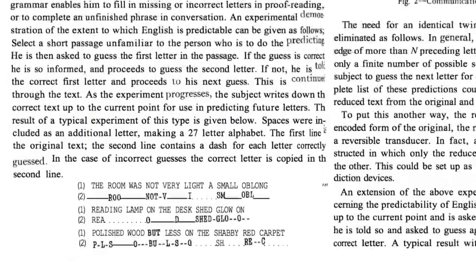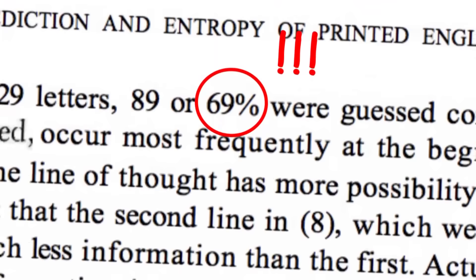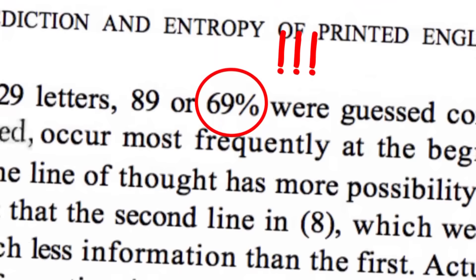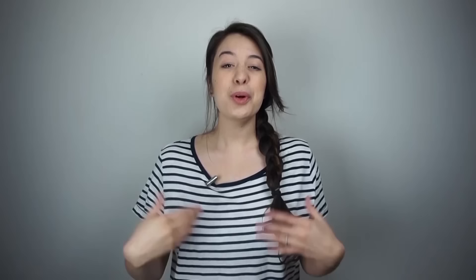But does it really contain more information? You got that sentence at the start without asking 4.7 questions per letter. This page from Claude Shannon's original paper on the prediction and entropy of printed English shows original text and participant guesses — dashes represent letters guessed correctly on the first try. He found 69% of letters were guessed correctly on the first try. That's because English is not a totally random sequence of letters — there's grammar, spelling, patterns. Like Q always being followed by U, or E appearing far more than Z. In information theory, these are called redundancies.